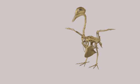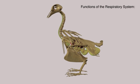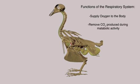The avian respiratory system is the most efficient in the animal kingdom. The primary functions of the respiratory system are to supply oxygen to the body tissue and to carry away carbon dioxide produced by high levels of metabolic activity.